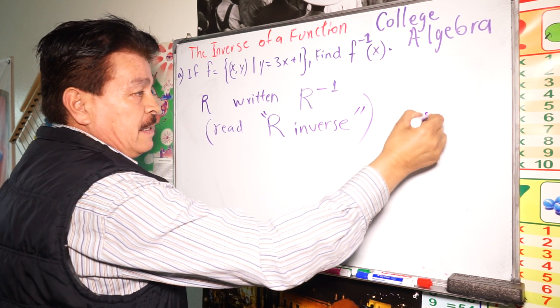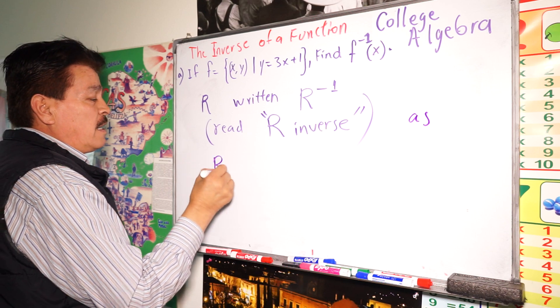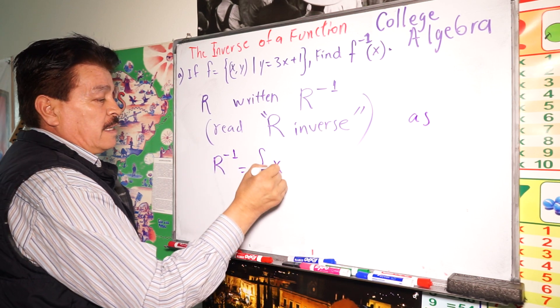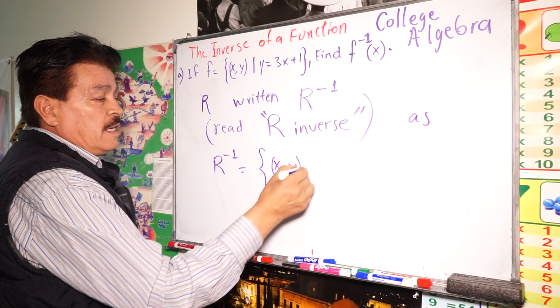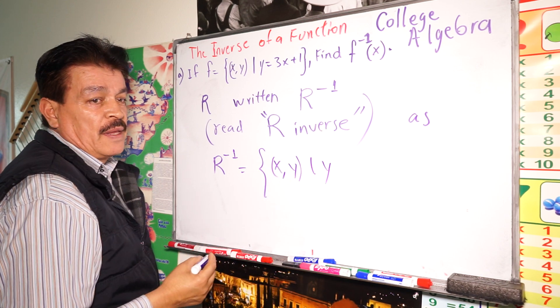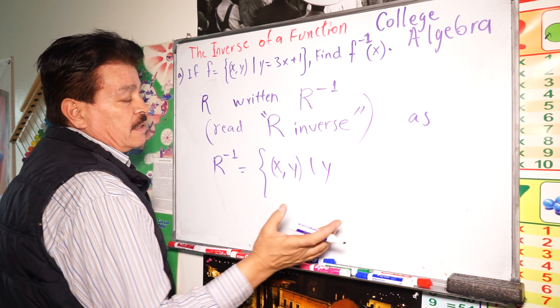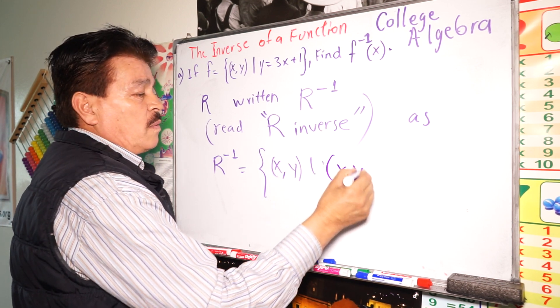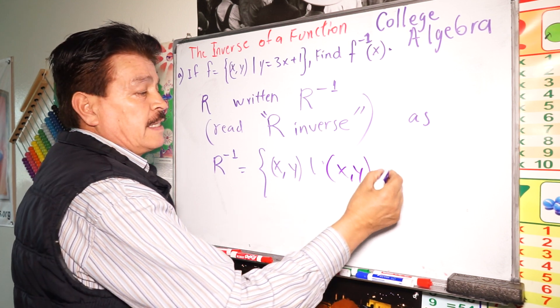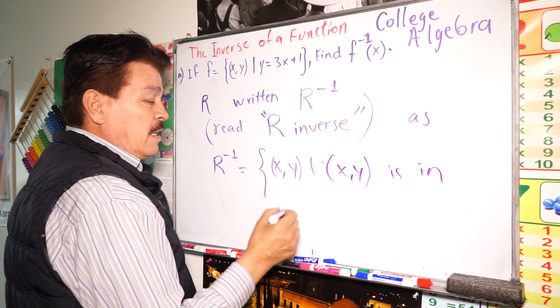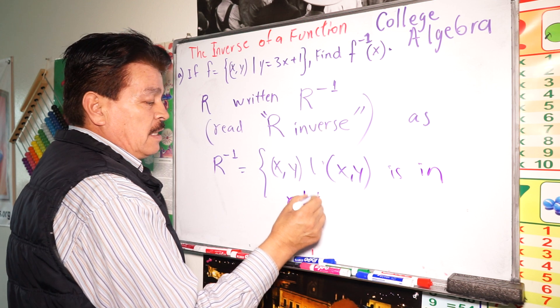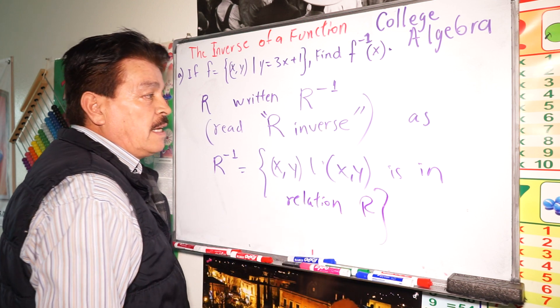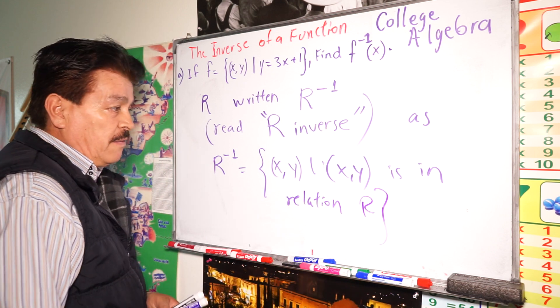As R inverse, like this: x comma y, such that y comma x is in the relation, relation R, right? So, very simple. That is not fair.